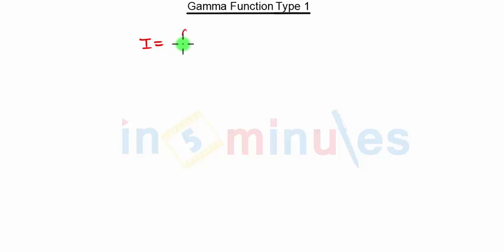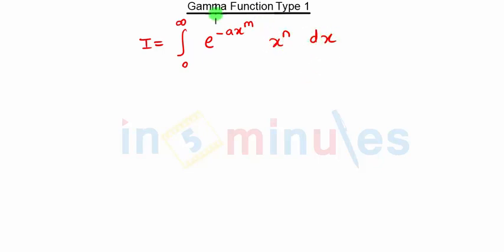Hello everyone, welcome to 'In 5 Minutes.' In this video we are going to see the Gamma Function Type 1. In Type 1, our equation will be something like this: integration of 0 to infinity, e raise to minus a·x raise to m, into x raise to n, dx. Mind my words — this is not a gamma function, this is some random equation.